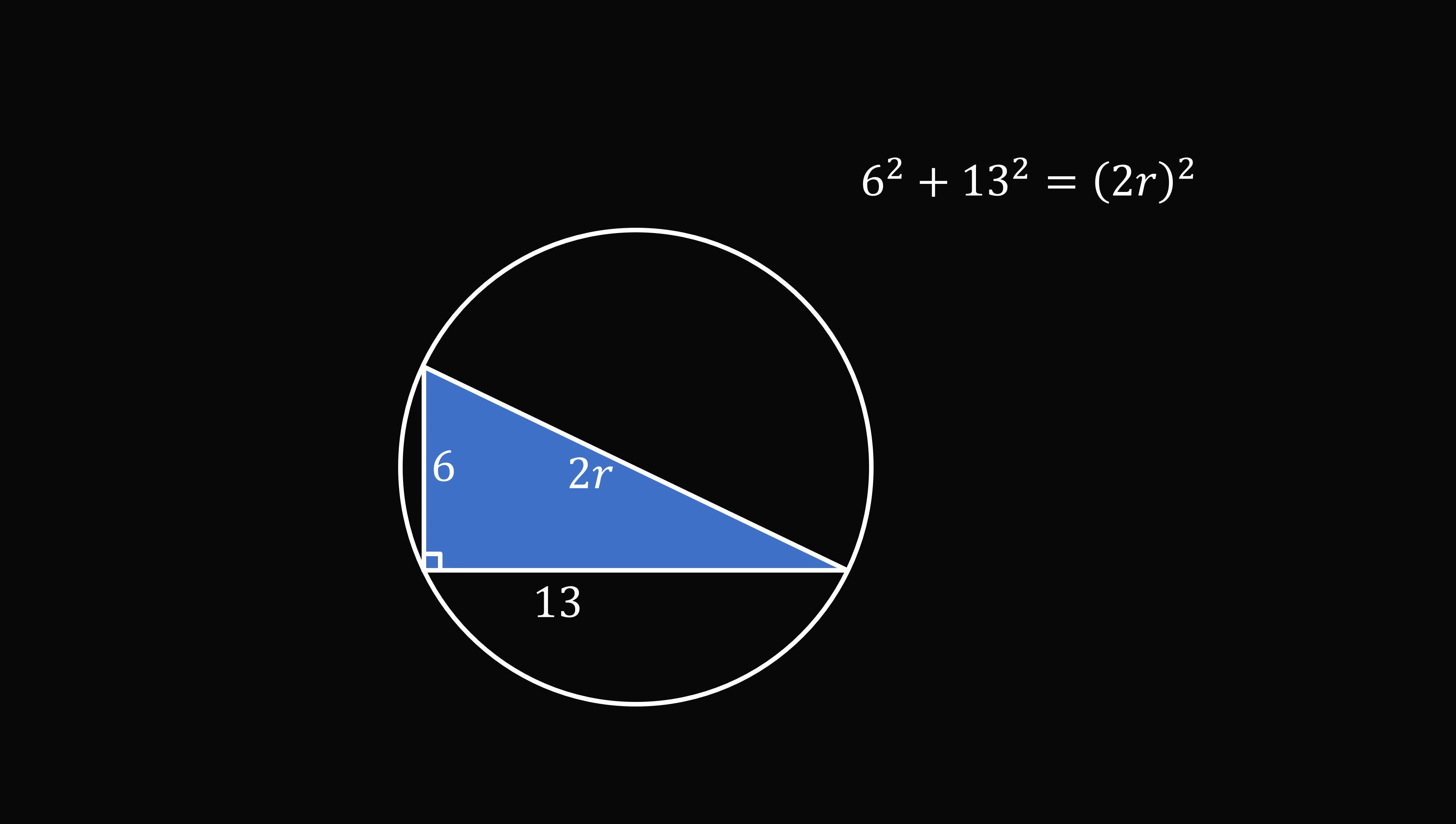We have 6² plus 13² is equal to the square of 2r. This means 205 is equal to 4r². And thus, r² is equal to 51.25. Multiplying both sides of the equation by π gives πr², which is the area of the circle, is equal to 51.25π. And that's the answer!